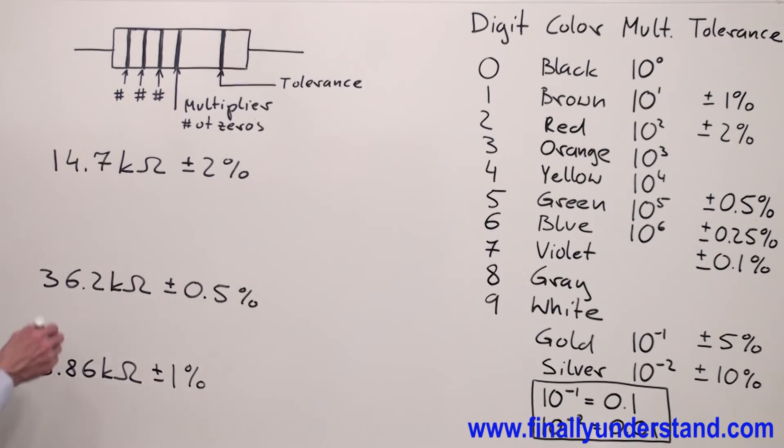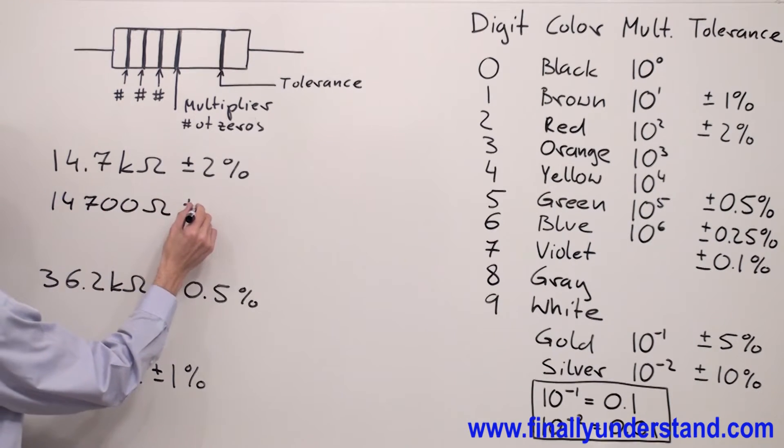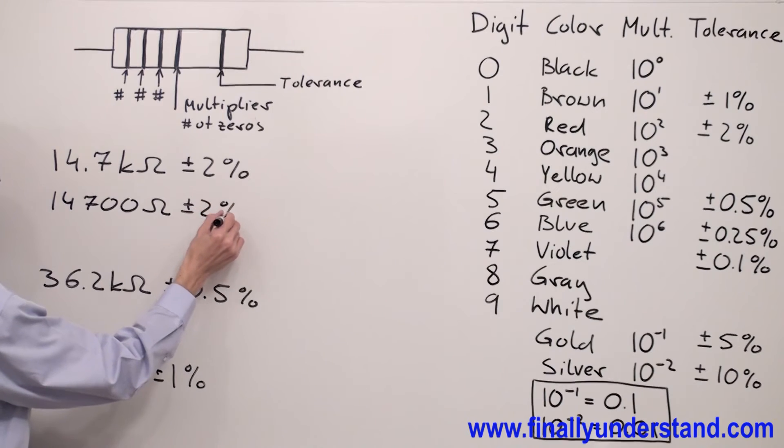What we're supposed to do in this case? Just rewrite this value using regular decimal notation. I have 14,700 ohms plus minus 2%.